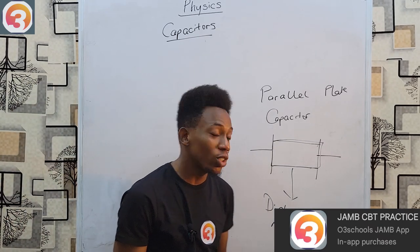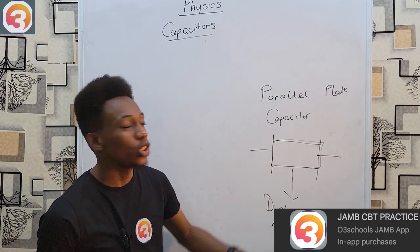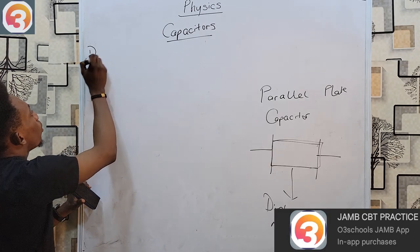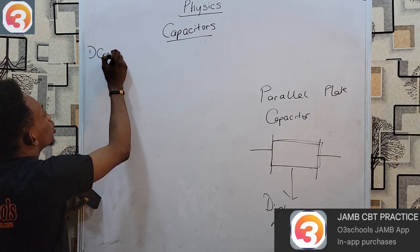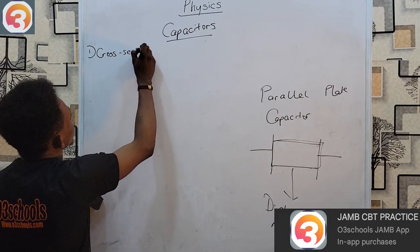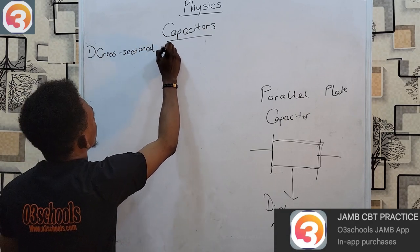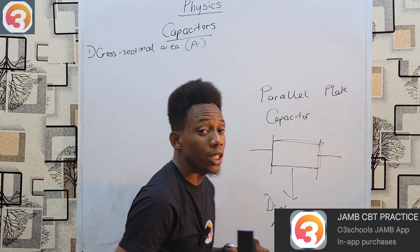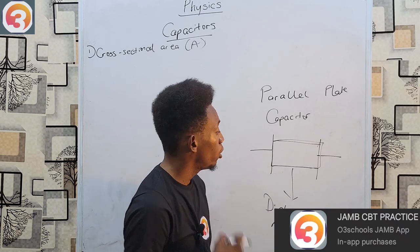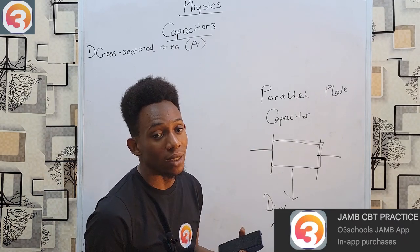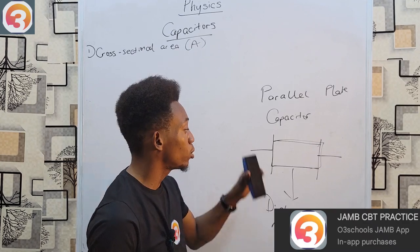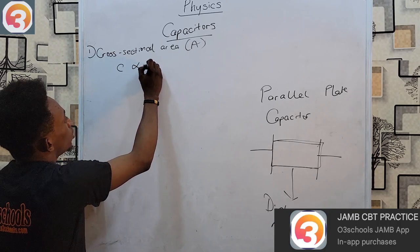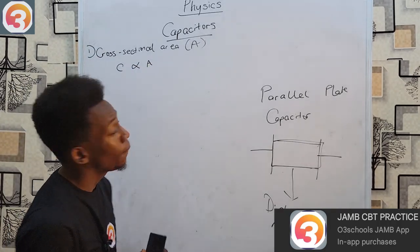The factors that determine how much charge a parallel plate capacitor can store are: first, the cross-sectional area of the plates. The bigger the area, the bigger the capacitance; the smaller the area, the smaller the capacitance. Capacitance is directly proportional to the area — they increase together.